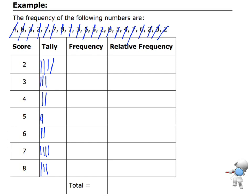Now I'm going to make that into a frequency, so I'm just going to count up how many there are. Under the score of 2, that occurred 4 times. For 3, I've got 3 tally marks, 2 tally marks for 4, 2 for 5, 2 for 6, 4 for 7, and 3 for 8.